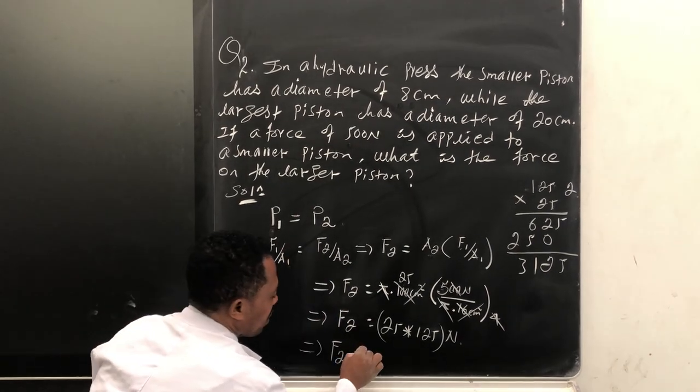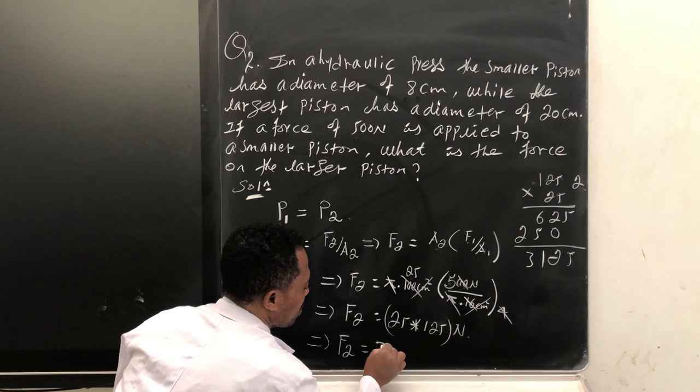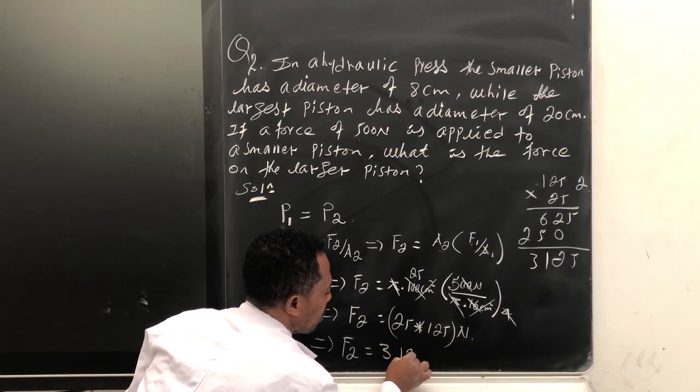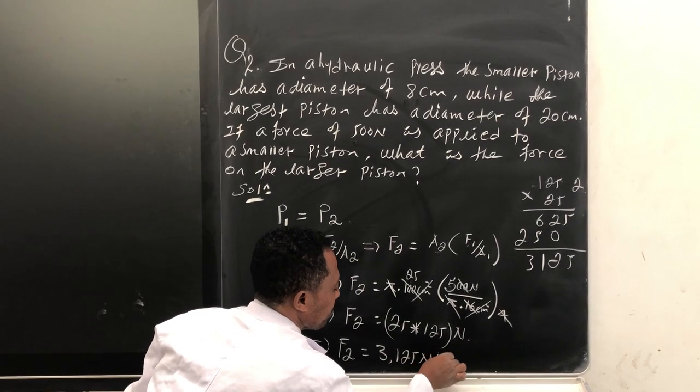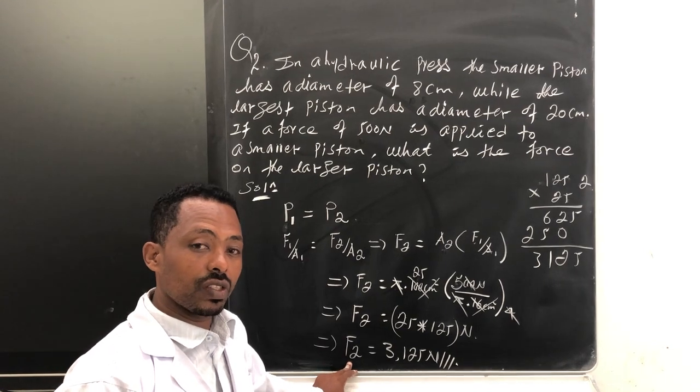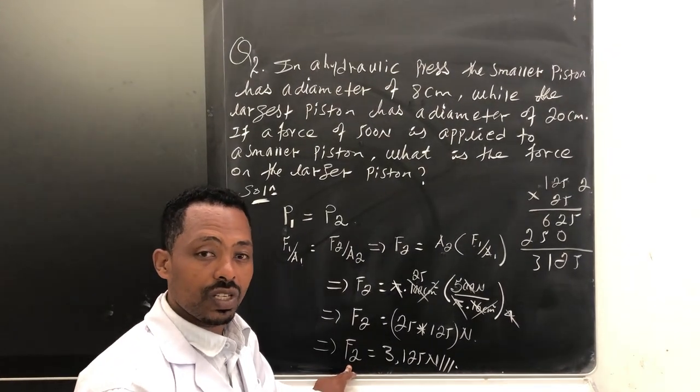So the force on the piston two is 3,125 newtons. We did it. This is the way how we can tackle such a problem.